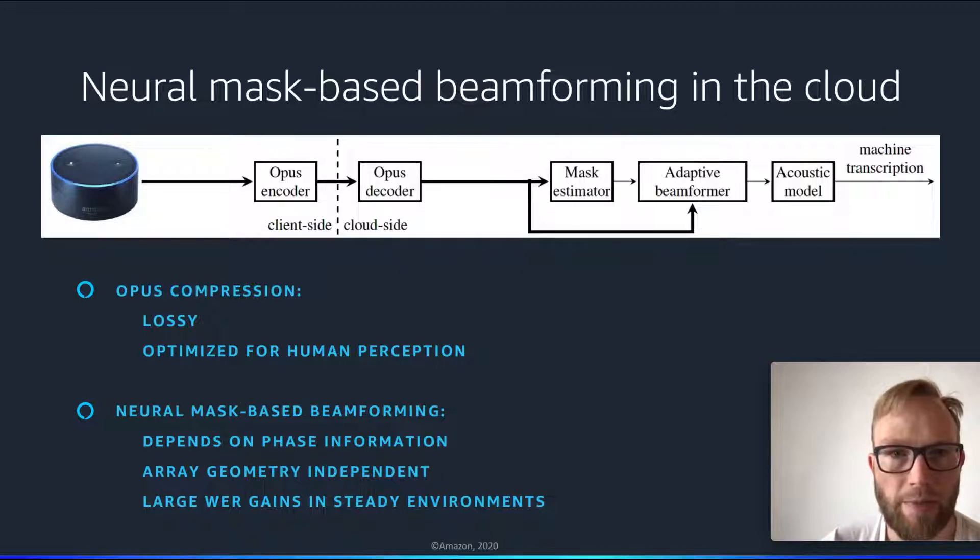In neural mask-based beamforming with Opus compression, we have this conflict that the compression is optimized for human perception while neural mask-based beamforming relies on phase information. If that is present, we can expect large word error rate gains with neural mask-based beamforming.